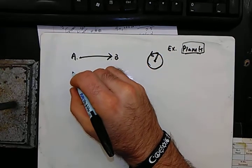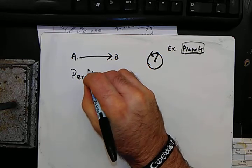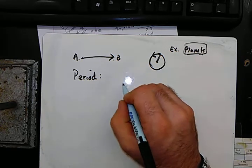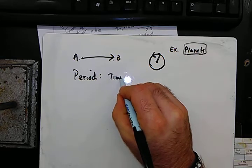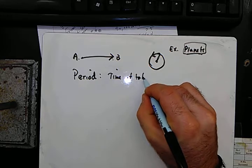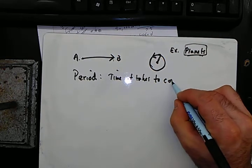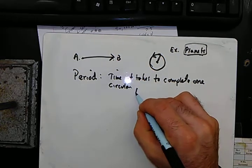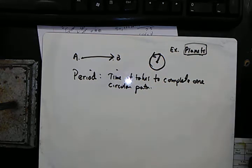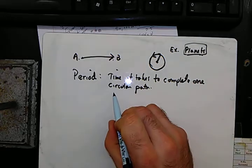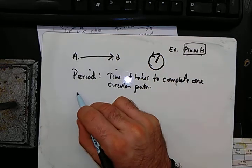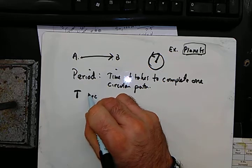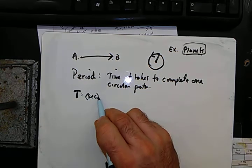A couple terms we need to look at. The first one is called period — that is the time it takes for an object to complete one trip around a circular path. It is measured in seconds. For instance, the period of the earth is one year. We can call this big T, and it's measured in seconds generally, so we can convert a year to seconds in that case.